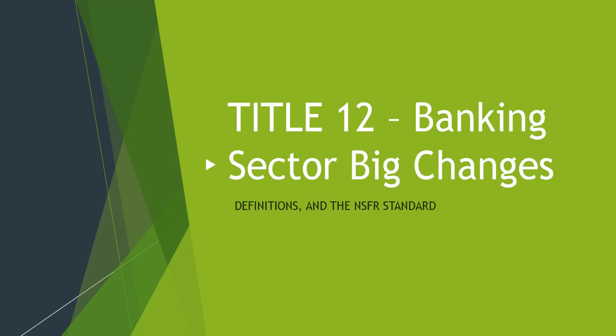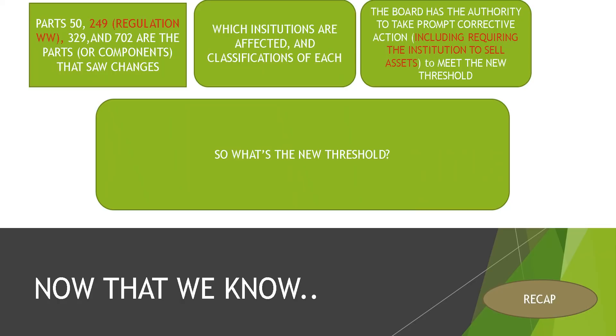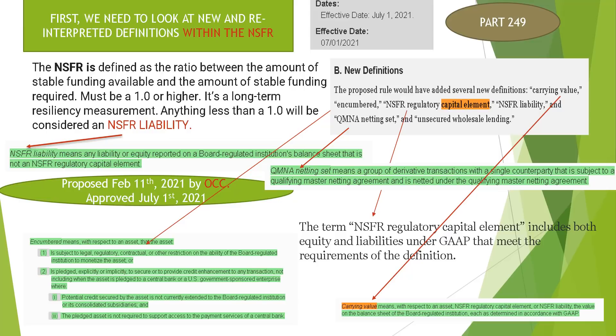We've broken down the four parts affected, determined that part 329 was the most relevant, and went over the different institutions and how they were affected. Now we're going to look into definitions and the NSFR standard that all these banks must meet the threshold for. Parts 50, 249, 329, and 702 are the components that saw changes in the Title 12 sector. In the event that they do not meet this new NSFR threshold, the board has the authority to take prompt corrective action, including requiring the institution not in compliance to sell assets to meet the new threshold.